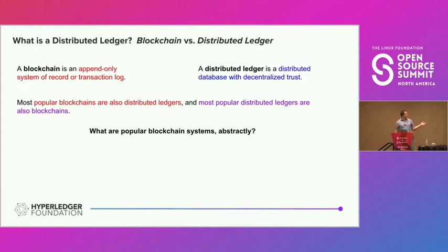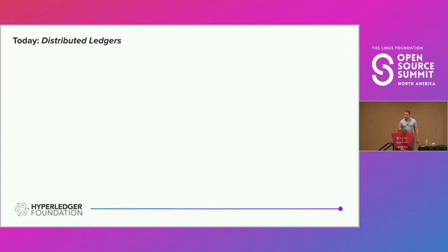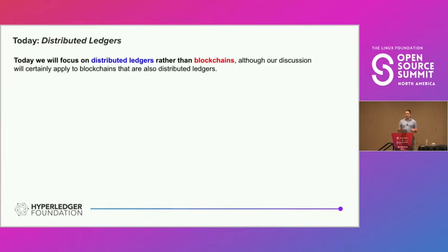Popular blockchain systems are abstractly just distributed databases with decentralized trust. Bitcoin is a distributed database for money with decentralized trust. Ethereum is a distributed database for programs with fully decentralized trust. And Fabric is a distributed database with partially decentralized trust — not necessarily as decentralized as Bitcoin or Ethereum. Today we'll focus on distributed ledgers rather than the immutability property of blockchains, though our discussion applies to pretty much every blockchain.